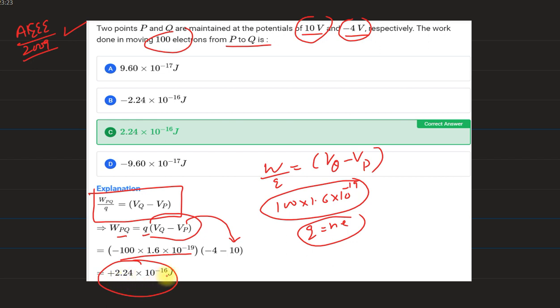We are going to get answer plus 2.24 into 10 power minus 16 joules. C is the correct answer. Thank you.